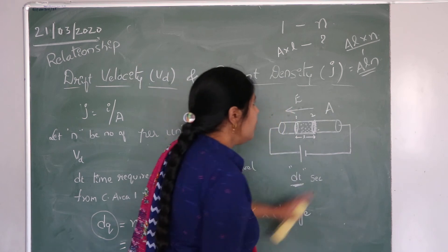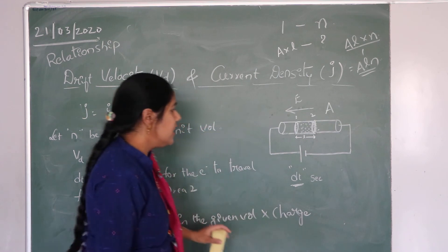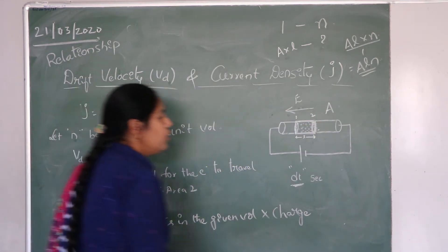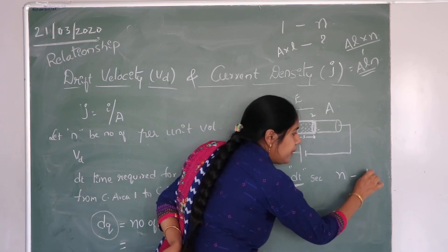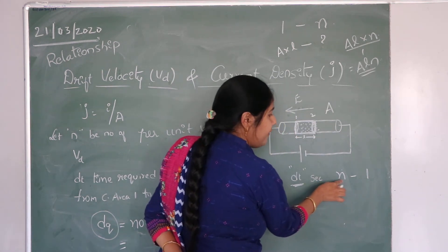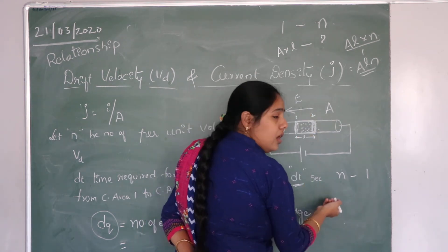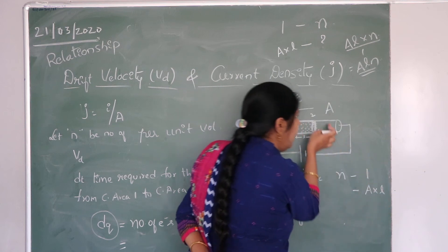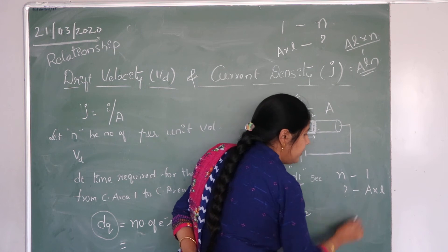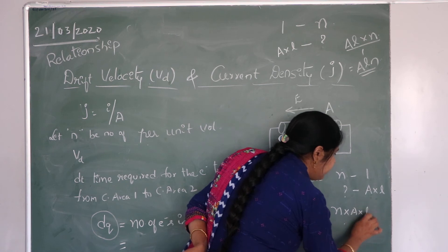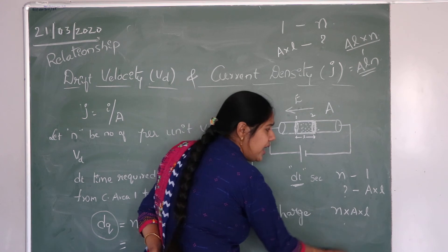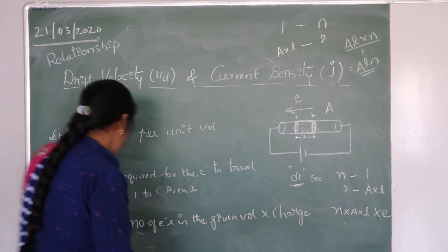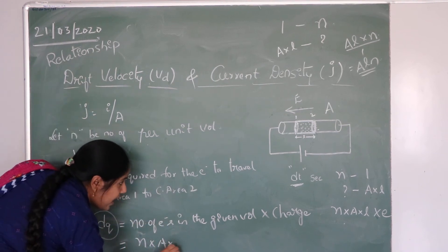N is the number of electrons per unit volume. For this volume, the number of electrons is N into A into L. So the total charge DQ equals the number of electrons in the volume multiplied by the charge of each electron, giving DQ = N × A × L × e, where e is the charge of each electron.